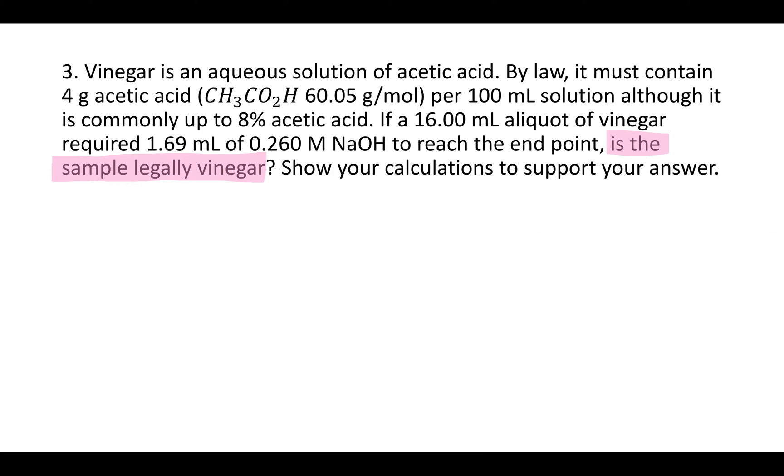Okay, so first, the question is, we have a sample, is it legally vinegar? And by legally vinegar, what they mean is that it has 4 grams of acetic acid for every 100 milliliters of solution. So we need to figure out how many grams of acetic acid we have, how many milliliters of solution we have, and how that compares, whether it's bigger or smaller, to 4 grams for every 100 milliliters of solution. So let's go through the problem, look at the other numbers they give us, see if we can figure out these two. Grams of acetic acid, milliliters of vinegar solution.